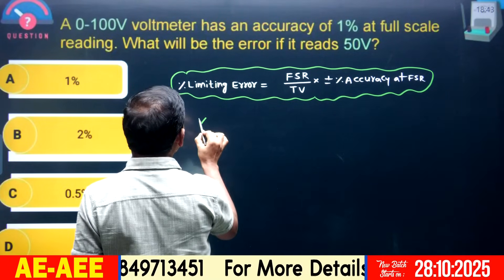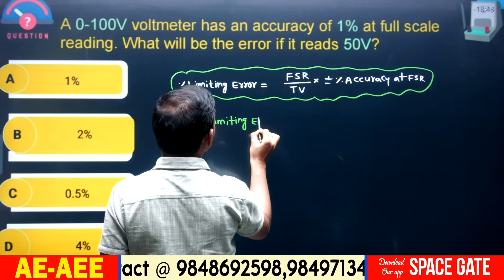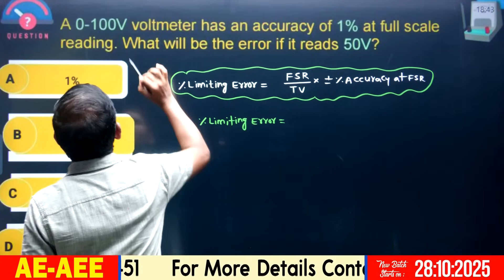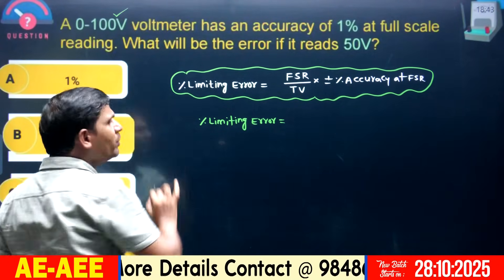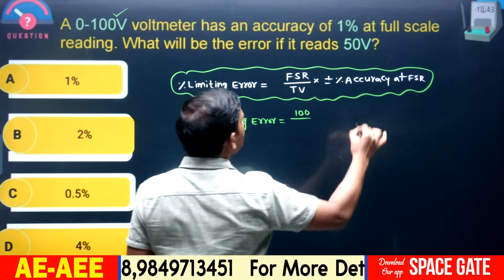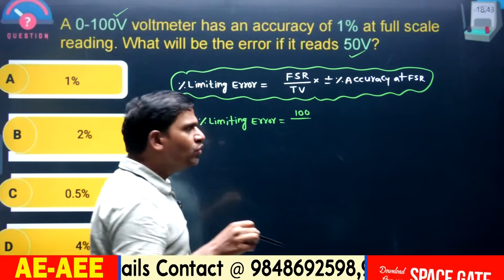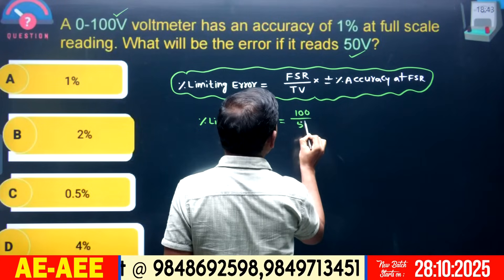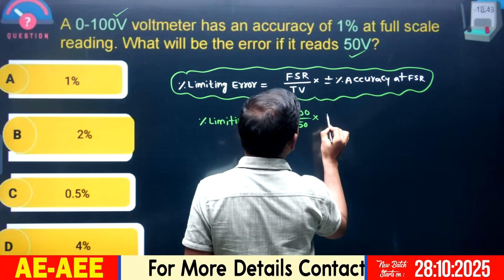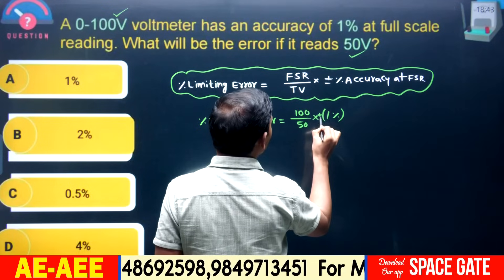Percentage limiting error equals full scale reading divided by true value, multiplied by the percentage accuracy at full scale. The full scale reading is 100 volts. The true value — what is being measured — is 50 volts. Accuracy at full scale is 1%. So: percentage limiting error = (100/50) × ±1%.